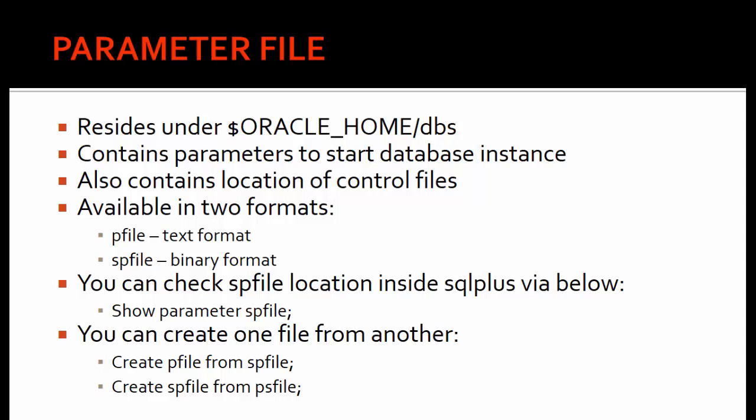Parameter files are available in two formats: the P-file, which is a text format, and the SP-file, which is in binary format. You might wonder why we have two parameter files. Most DBA activities require you to read the parameter file — for cloning, refreshes, or other activities. If you have a binary file you won't be able to read it. So you can create a P-file, change the content, perform your activity, and later convert the P-file back to an SP-file.